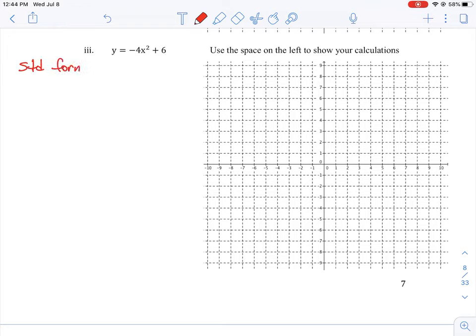So our parabola here in standard form is going to be y equals negative four times x minus zero squared plus six. So in our other questions, the value of k, which is related to that part for the vertex k, was always zero. In this case here, it's six.